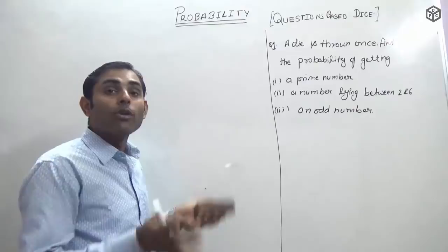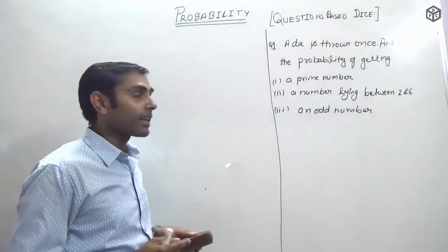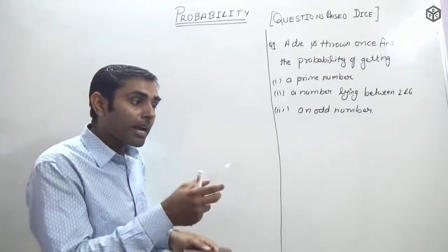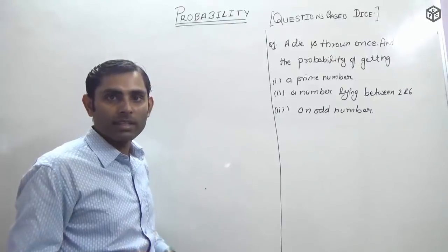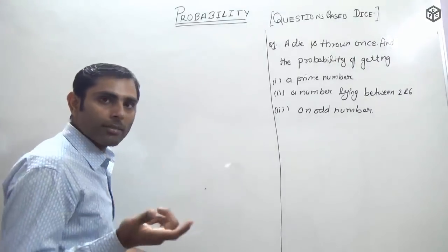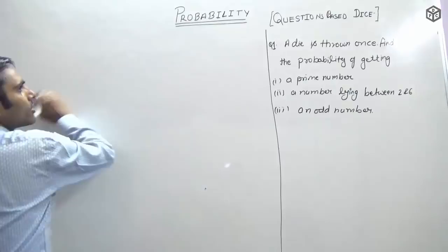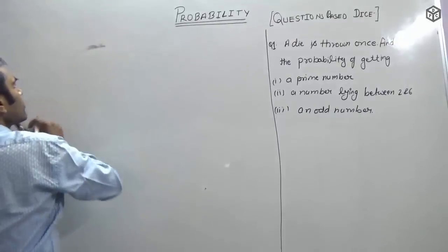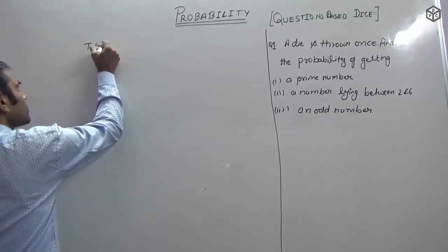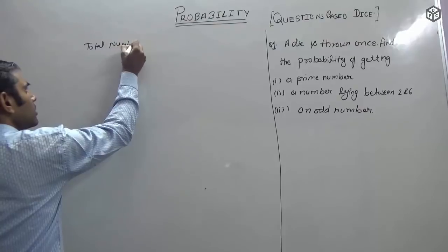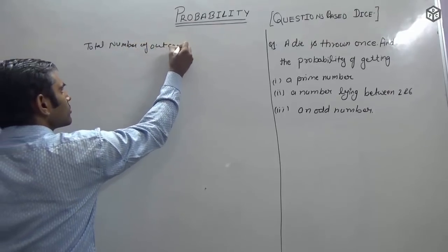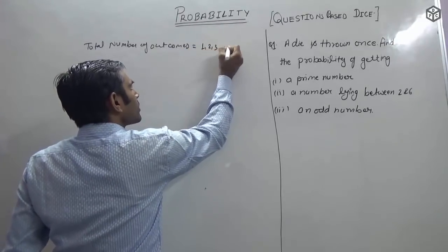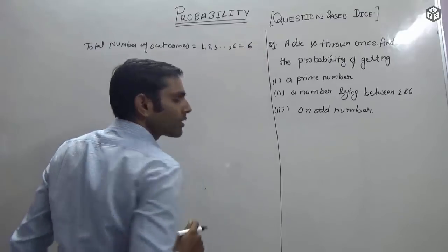In this experiment, how many outcomes will there be? The total outcomes on a die are one, two, three, four, five, six — so total outcomes are six.